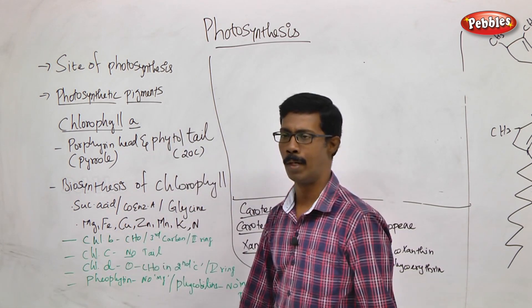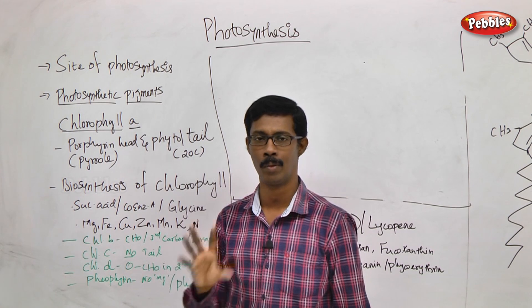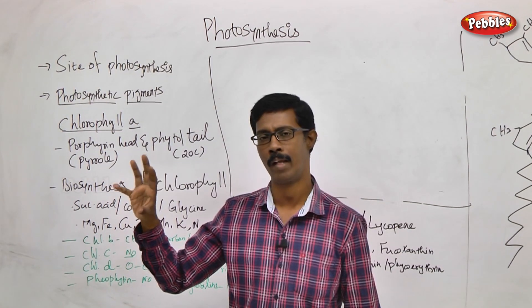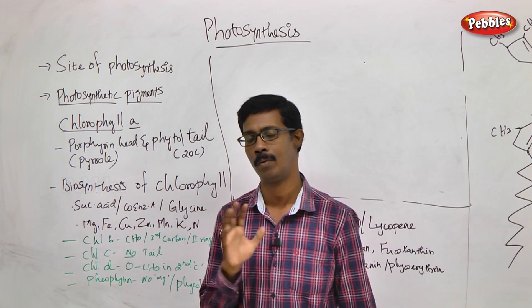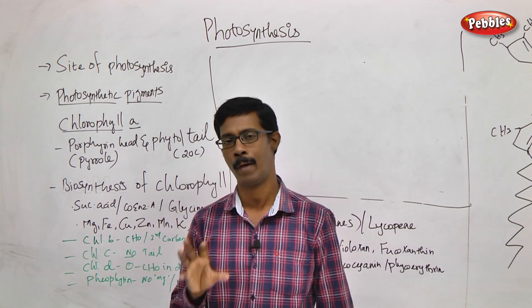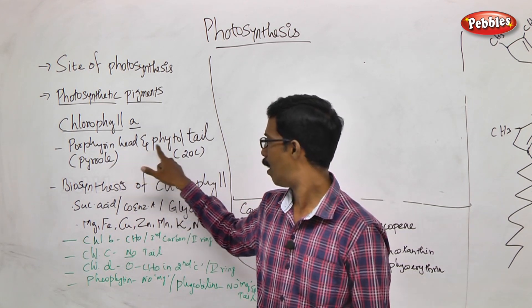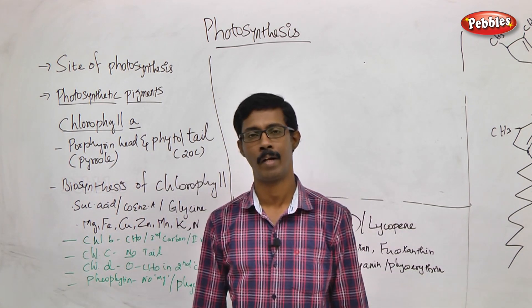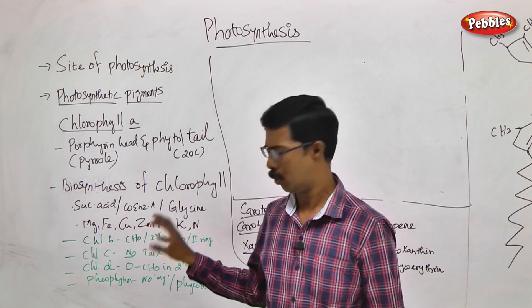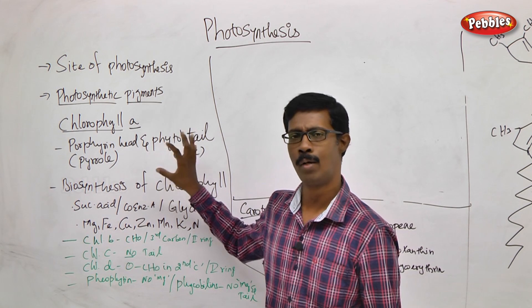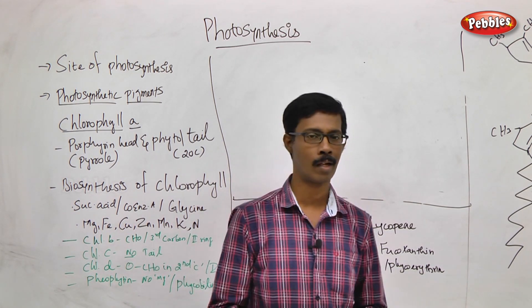Now let's talk about the structure of Chlorophyll A. Chlorophyll A has two major components: a head and a tail. The tail is hydrophobic - a lipid tail made up of a hydrocarbon chain, normally around 20 carbon atoms.